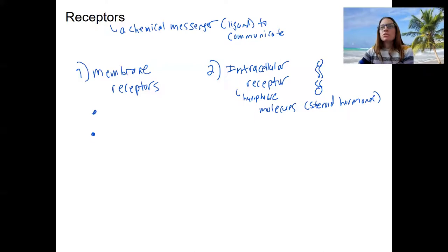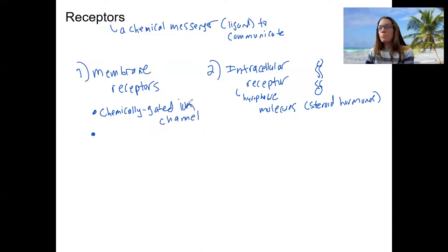Membrane receptors are two types. One type is going to be a ligand-gated or chemically-gated ion channel. An ion channel that opens in response to something binding to it. Super important, a big part of nervous system signaling. There are also G-protein coupled receptors that use second messenger signaling. These are going to be important for both endocrine and nervous systems.